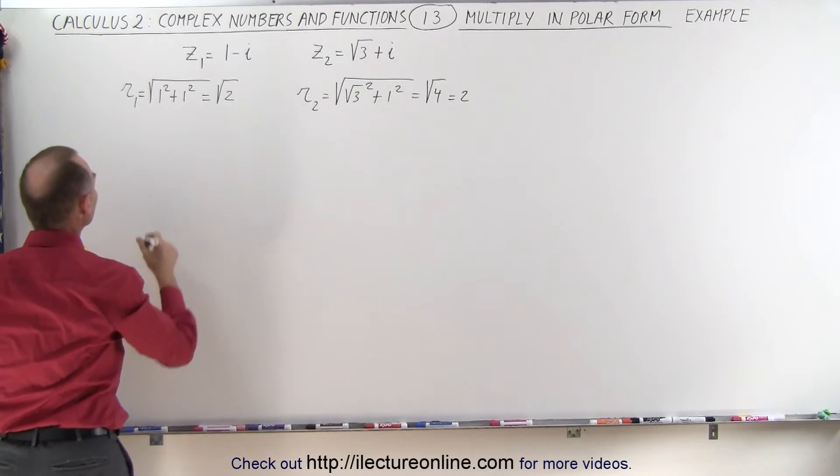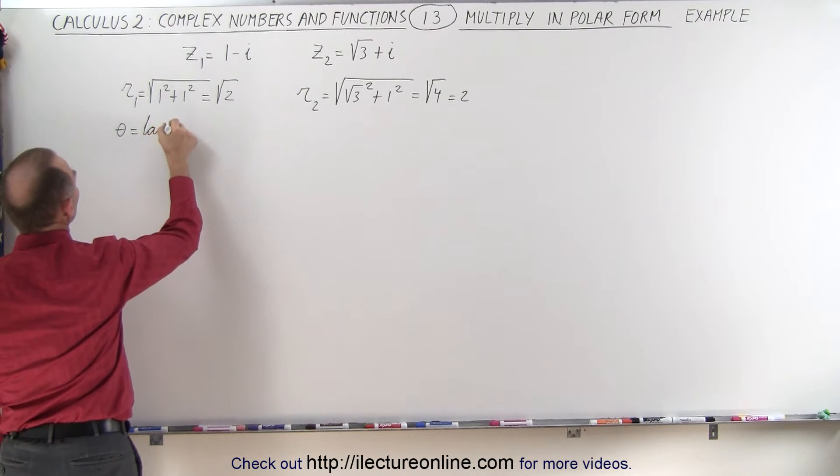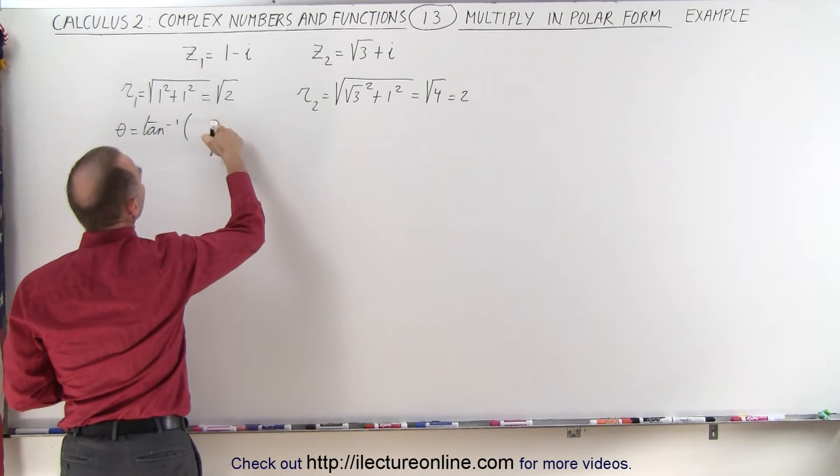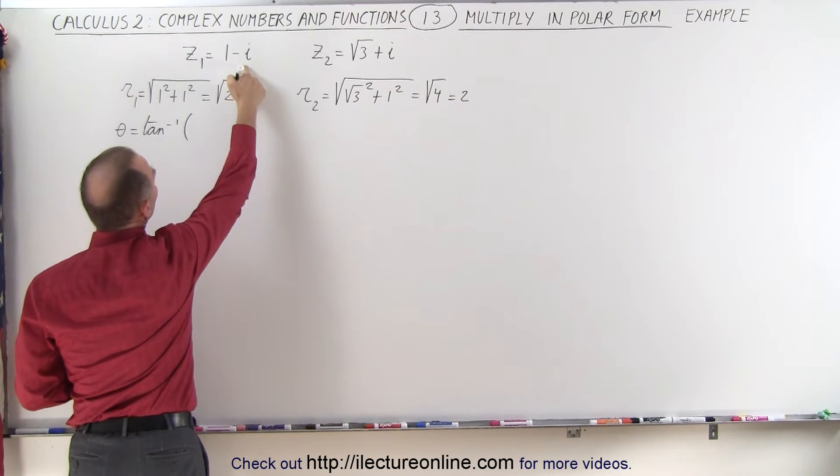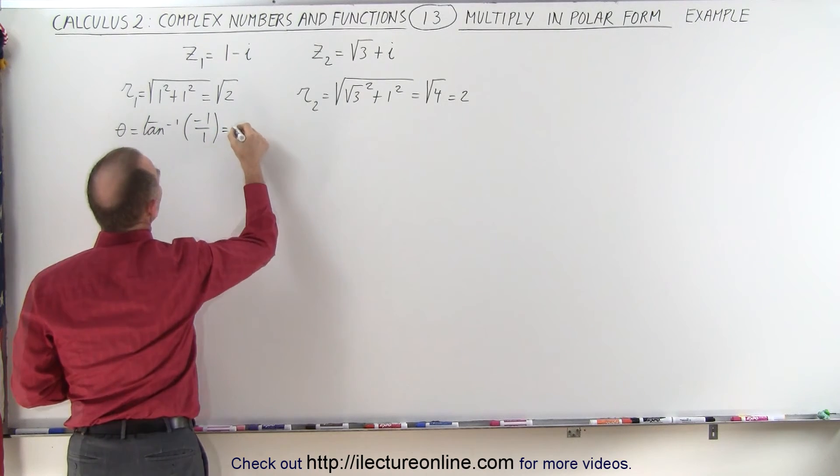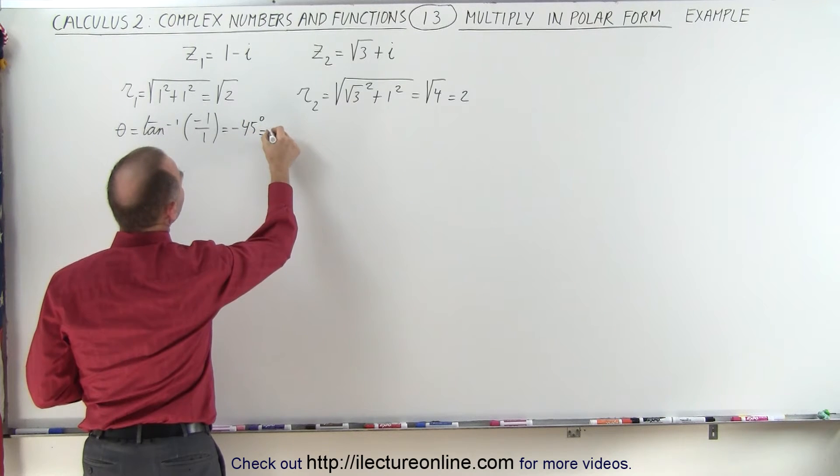And to find the angle, theta is equal to the arc tangent of—that would be B, that's minus 1 over 1, which is equal to negative 45 degrees, which is equal to negative pi over 2.